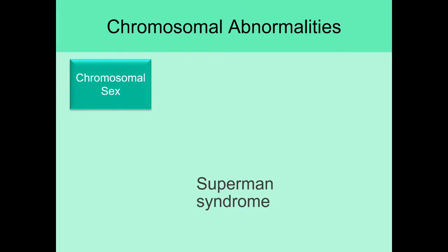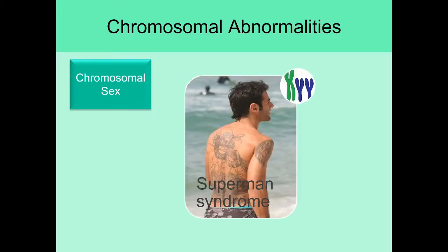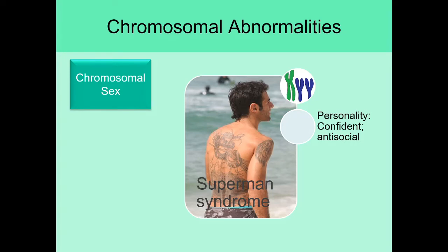Superman syndrome is sort of the opposite of Klinefelter syndrome because here we have one X and two Ys — an XYY person. This disorder oftentimes just enhances masculinity, and so a lot of times it's not picked up as anything abnormal. The personality is often that of a very confident person — the flip of Klinefelter syndrome. In fact, they might be so confident that they display what we call antisocial symptoms: they may not follow the law or may take advantage of people. Antisocial here does not mean withdrawn; it refers to those antisocial behavioral characteristics.